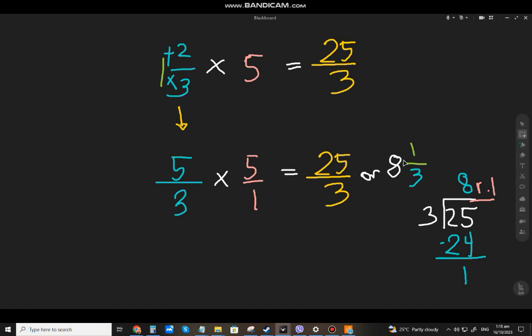So from the question, 1 and 2 thirds, times 5, the answer is 25 over 3, or 8 and 1 third.